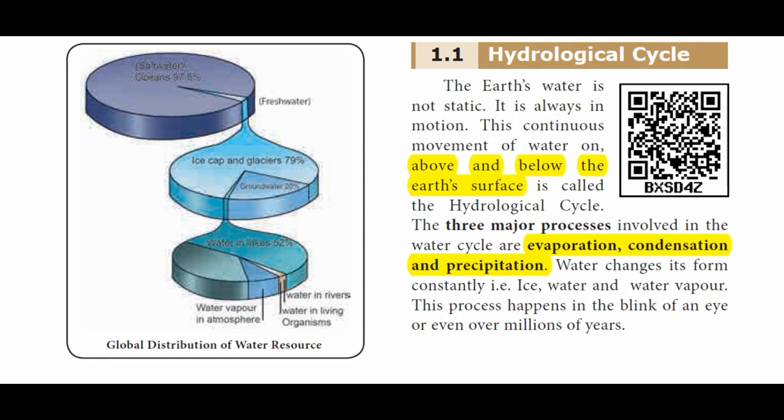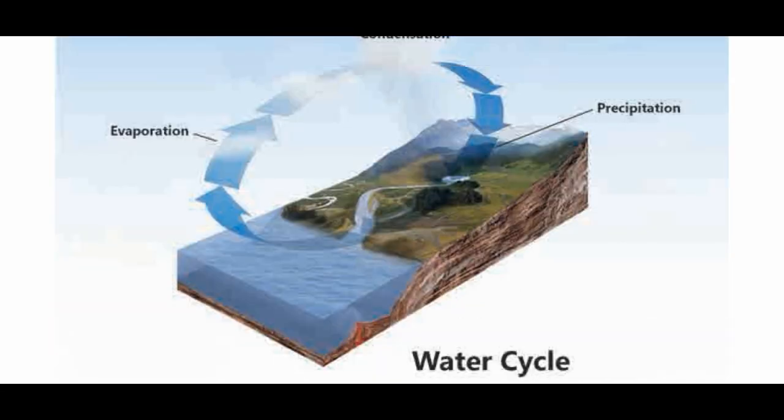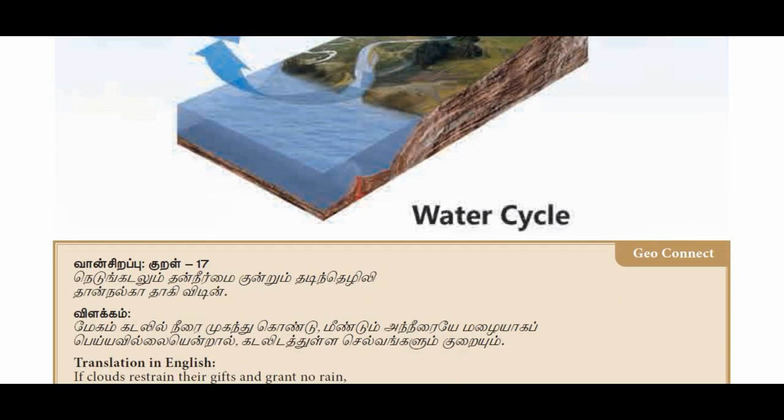When water is active in the atmosphere, there are many different kinds of precipitation. The hydrological cycle occurs both above and below the Earth's surface. The three main processes of the hydrological cycle are Evaporation, Condensation, and Precipitation. In the diagram, you will see these three processes. This is the water cycle.